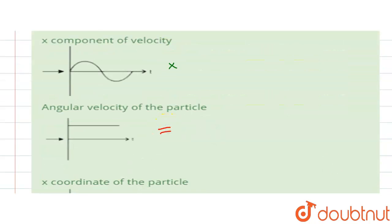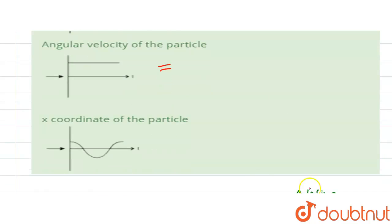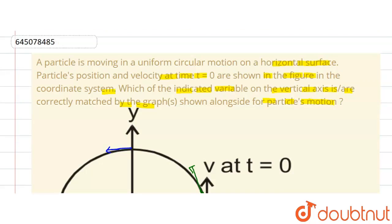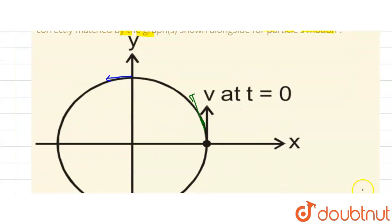right. Now here last is the x coordinate of the particle. So here we can check: x coordinate of the particle, so initially at this point x coordinate is the maximum, then it goes like here